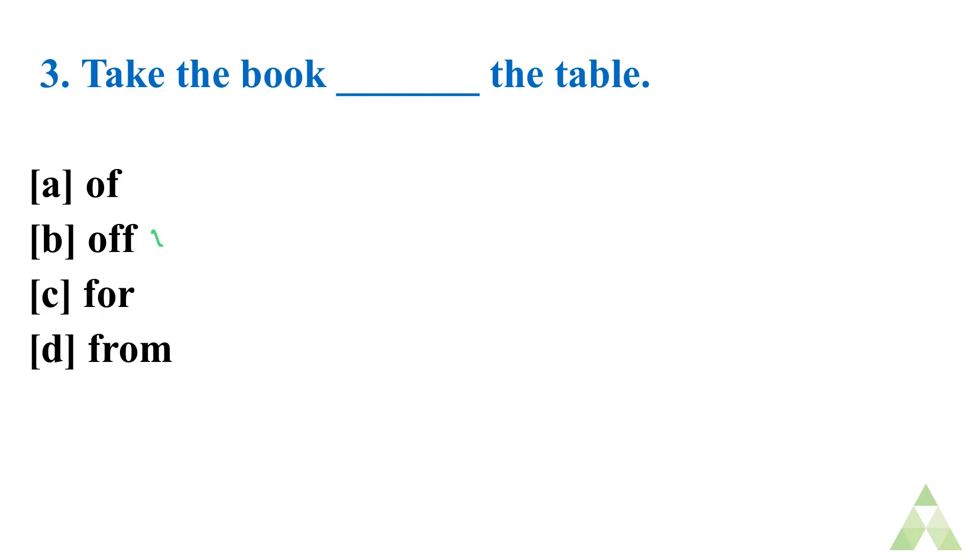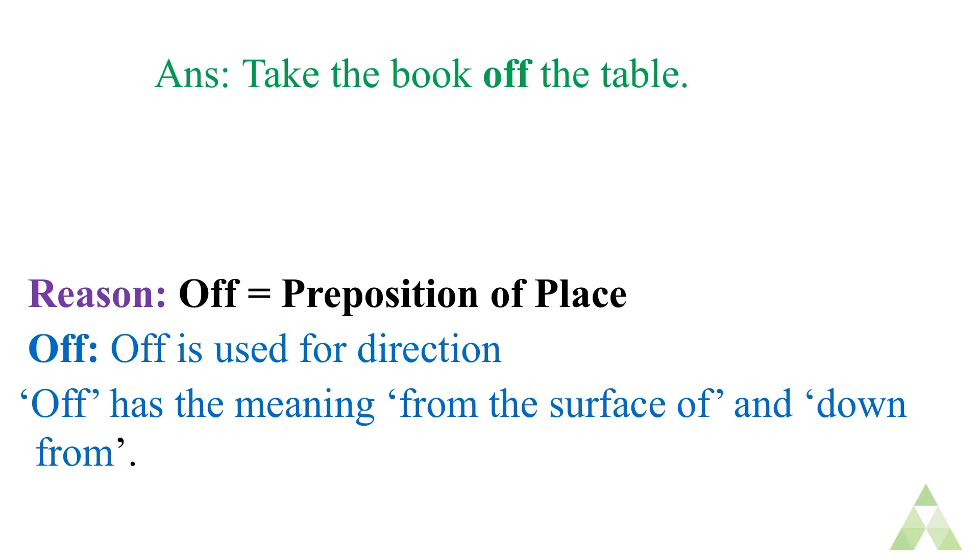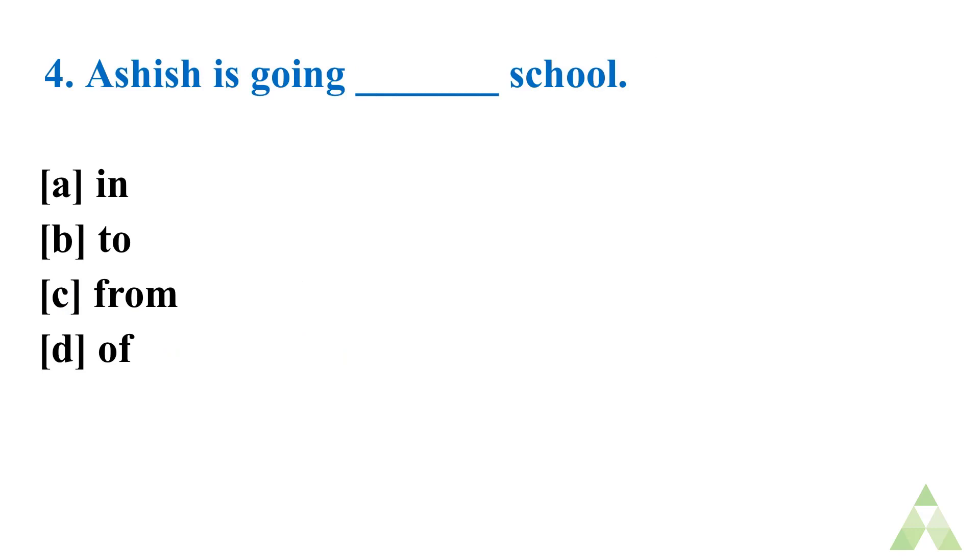Some of you have written the right answer. The right answer is O double F. Off. See the example and the reason you can better understand. Take the book off the table. So off is used as a preposition of place. It is also used for direction. Off has the meaning from the surface of and down from. From the surface of means surface ru.